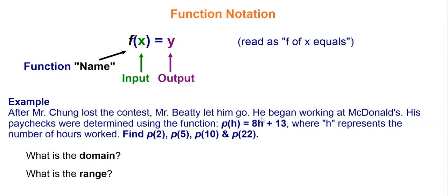Let's look at an example that used function notation. So, down below, Mr. Chung lost the wing contest, and BD fired him. Chung began working at McDonald's, and his paychecks were determined by the function p for paycheck, p(h), where h represents the hours worked, equals 8h plus 13. So, we want to find p(2), p(5), p(10), and p(22).